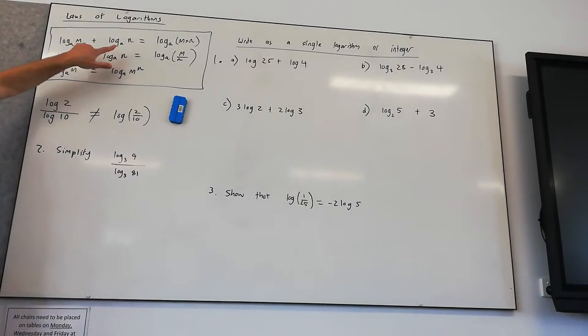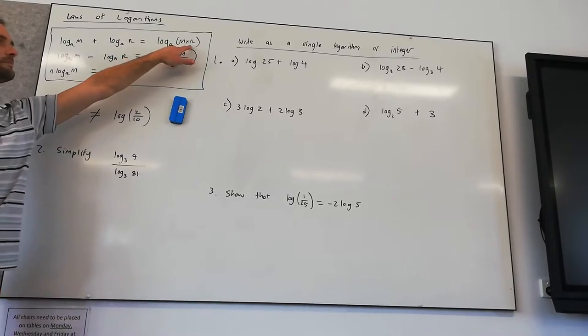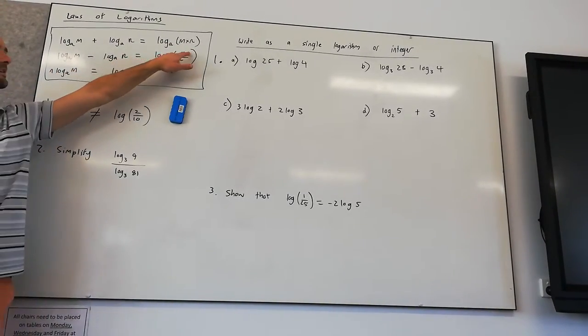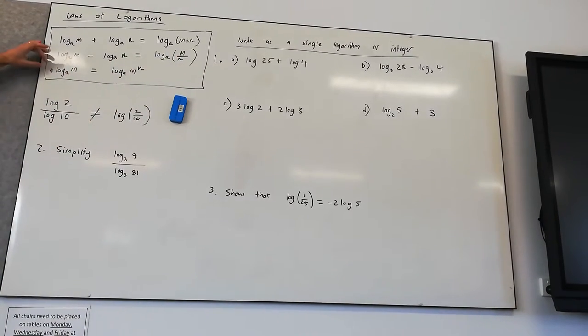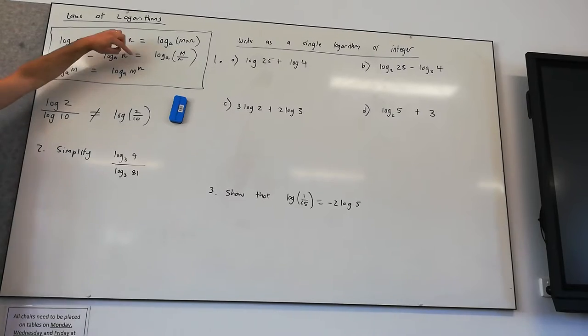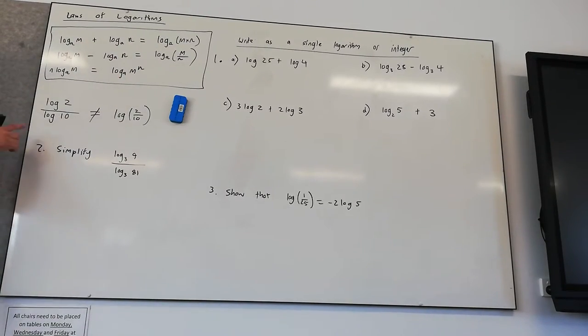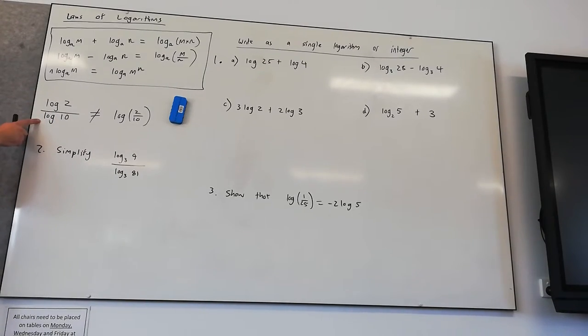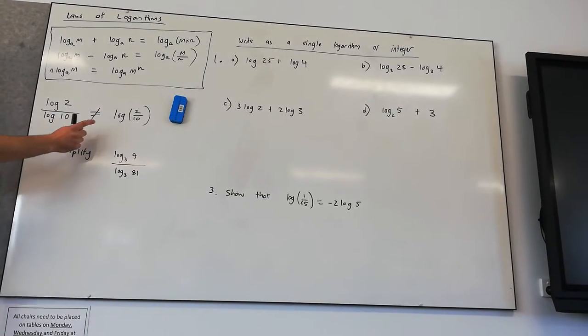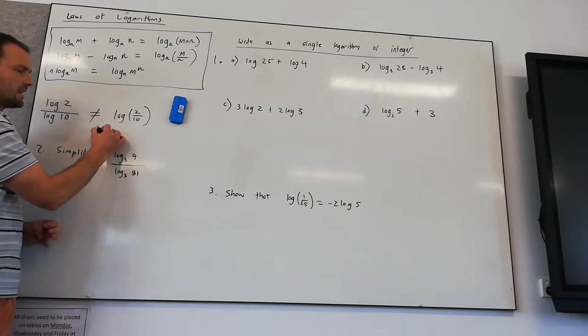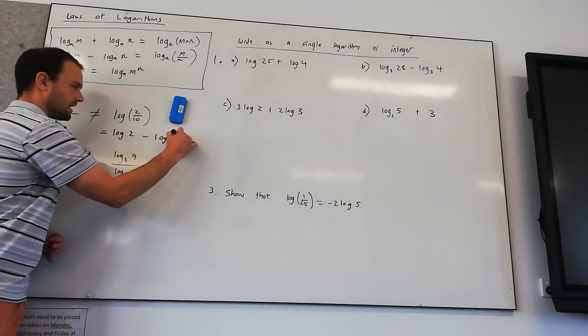So we have log M plus log N equals log M times N. Log M take log N, M is at the top, N is at the bottom. And then we have this rule as well: if we have N log M, we can express it as log M to the power of N. And I just want to point this rule out because a couple people make this error. That log 2 divided by log 10 is not equal to log 2 on 10.